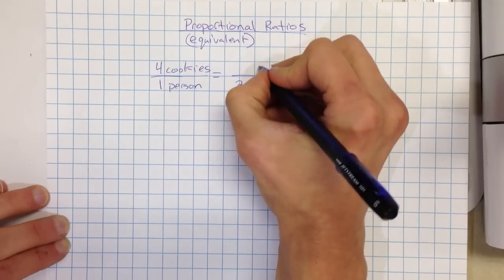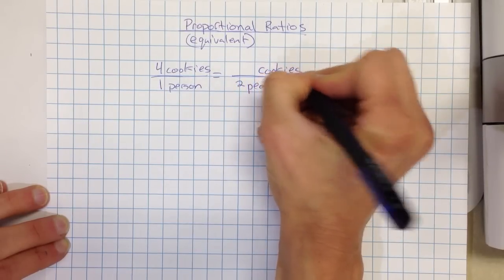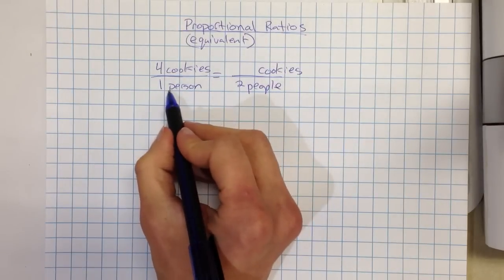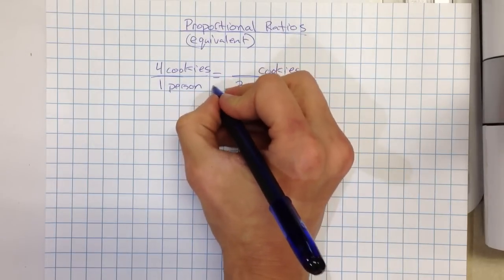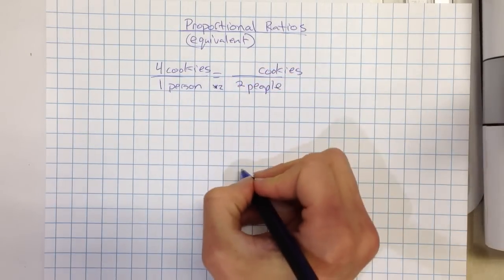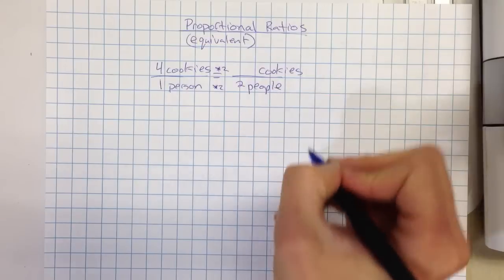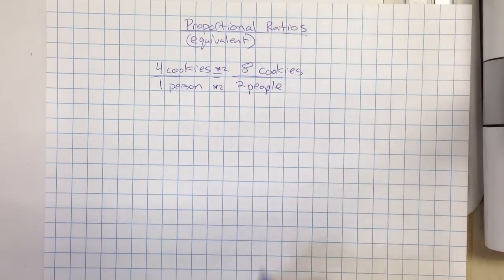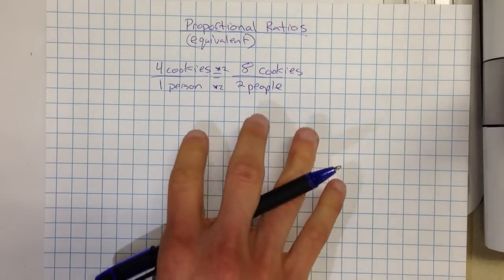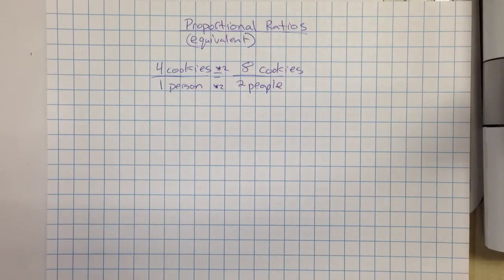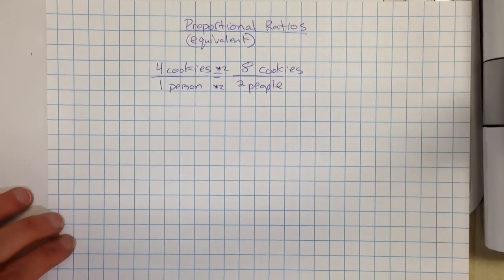Okay, if we're keeping things consistent and equivalent, then we would say these ratios would be proportional. Now we can look at this and say, oh, we have one person to two people. That's an easy thing. All I have to do is multiply by two. If I do that to the denominator, I can also do that to the numerator. Four times two would give us eight cookies for two people. So these are proportional ratios, four to one and eight to two. They are equivalent. If I was to simplify them, I would get the same thing.